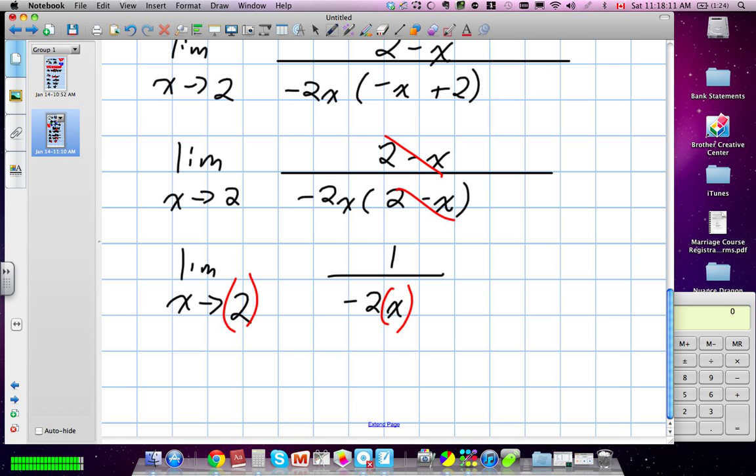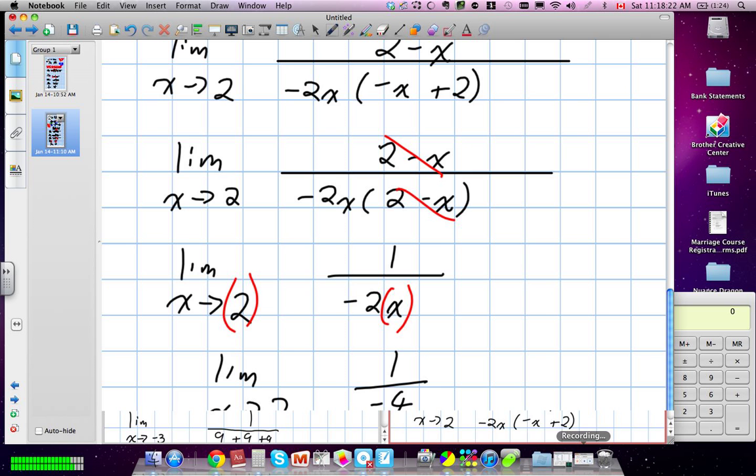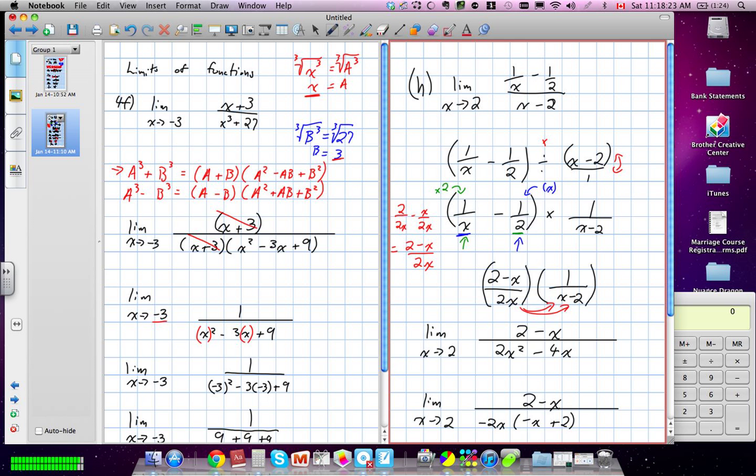And we have a limit of x approaches 2, 1 divided by negative 2x. We're going to now replace x with 2. And we have a limit of 1 over negative 4, or negative 1/4. The limit of x as it approaches the number 2.